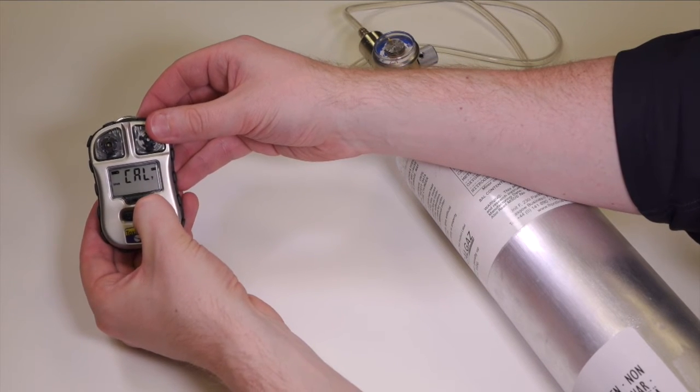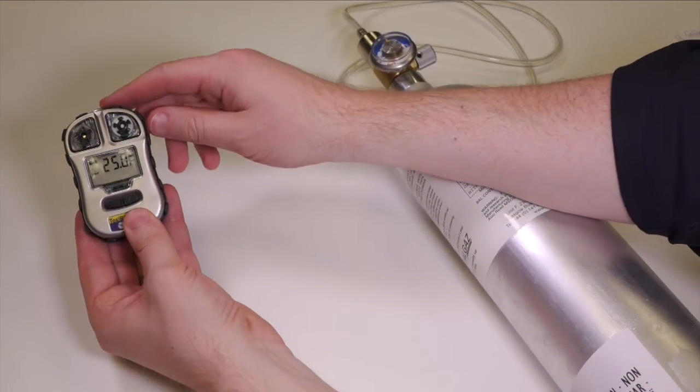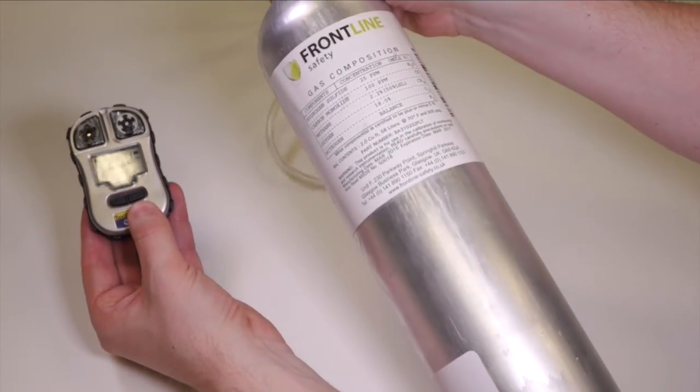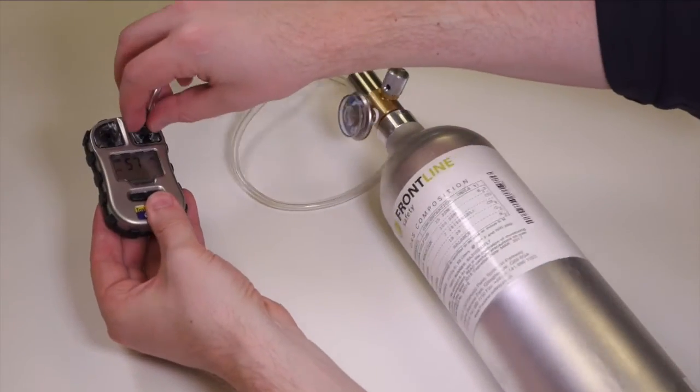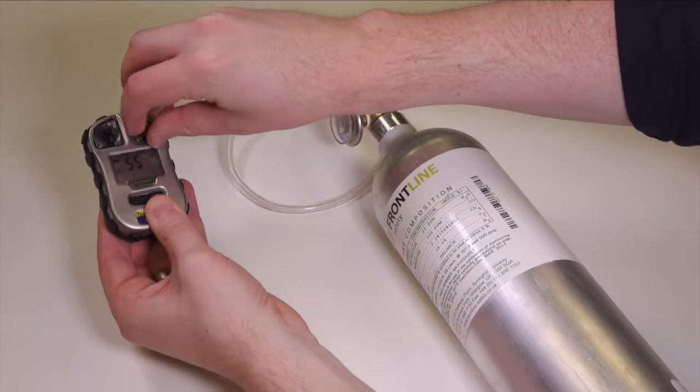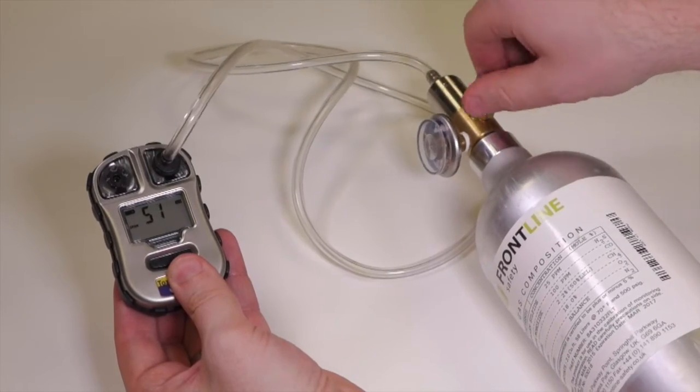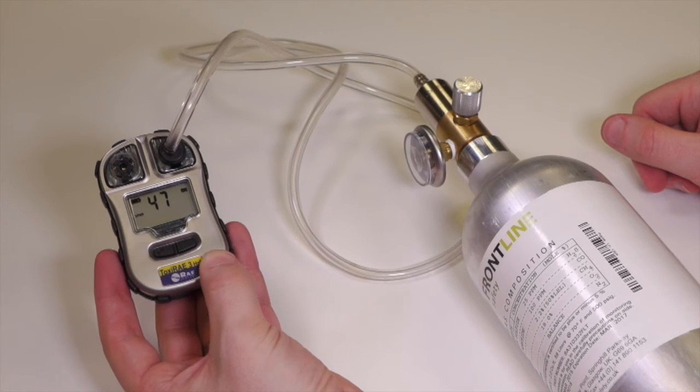So we acknowledge that by saying yes and it's asking is the span gas you have 25 ppm of H2S. In this case, yes it is. So we hit yes, apply the calibration adapter to the sensor on the right hand side and switch the regulator on to full flow and that will take 60 seconds to do the calibration.